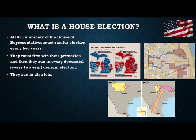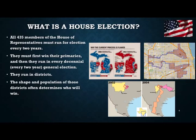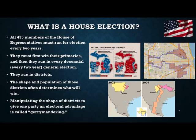They run in districts, which are portions of a state. The shape and population of those districts is really the interesting factor, because depending on how those districts are drawn can have a big influence on who actually wins the election. Districts can be manipulated in a way that gives an advantage to one party or another, and that process is called gerrymandering.